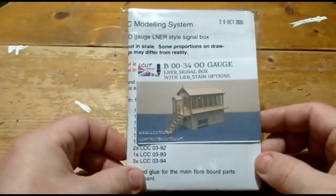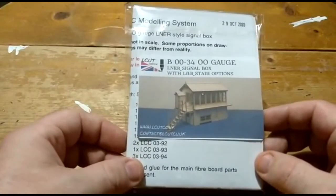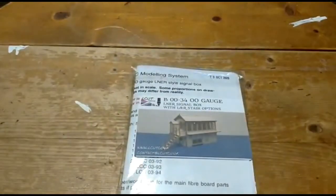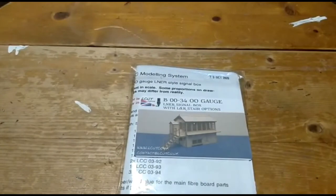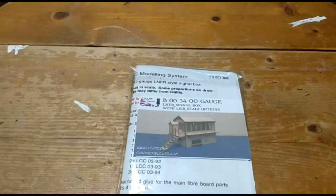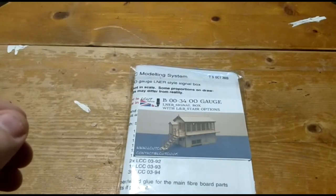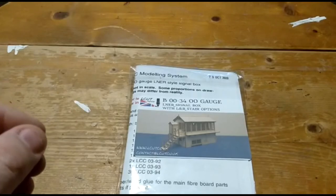Signal boxes have been an integral part of our railway network since the beginning, controlling the flow of trains on various sections of track. A lot of them now have been demolished or replaced with centralized signaling centers in major cities and junctions. But some still remain and it's something that looks good on the layout.